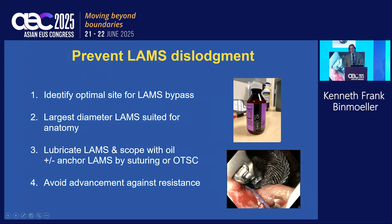The key is prevention, and here are four tips to prevent dislodgement. First, identify the optimal site for LAMS bypass. Second, choose the largest diameter LAMS suited for the anatomy, ideally 20 millimeters. Third, lubricate the LAMS and your scope with oil — we use sweet oil. Fourth, you may anchor your LAMS with suturing or an over-the-scope clip, and avoid any advancement against resistance.